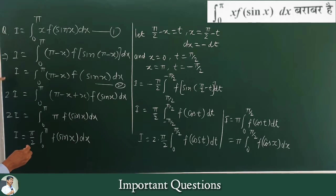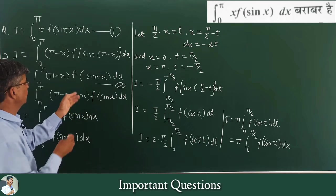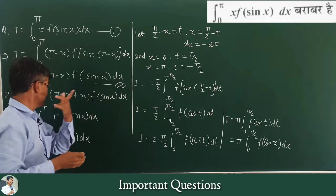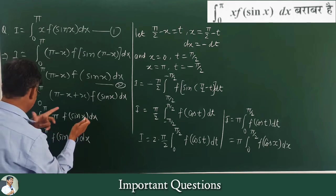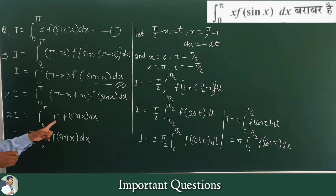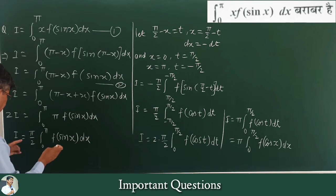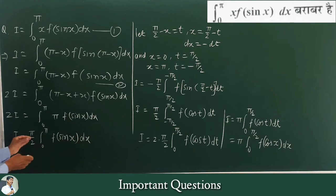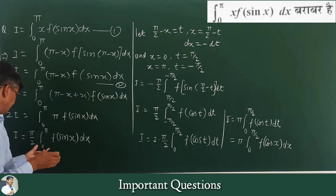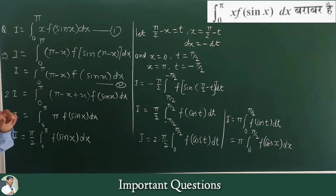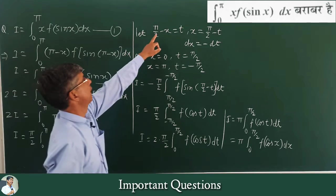Adding equation 1 and equation 2: I + I = 2I, and the integral from 0 to π of [(x) + (π - x)]·f(sin x)dx. The x terms cancel, leaving 2I = integral from 0 to π of π·f(sin x)dx. Now we need to simplify further since the options may not have the factor of 2.